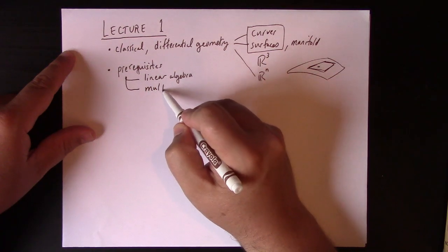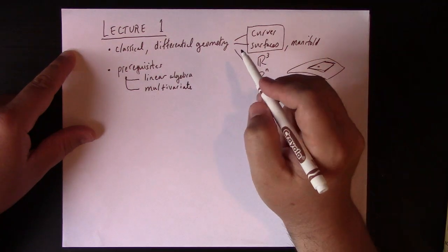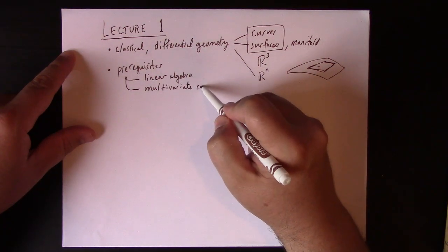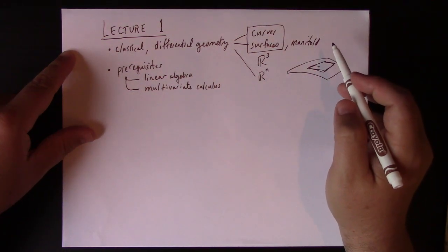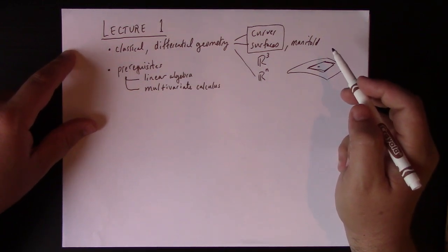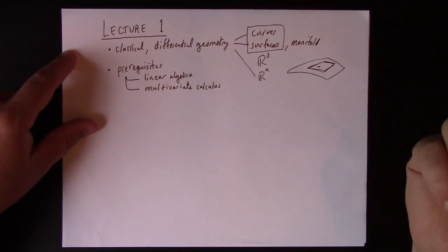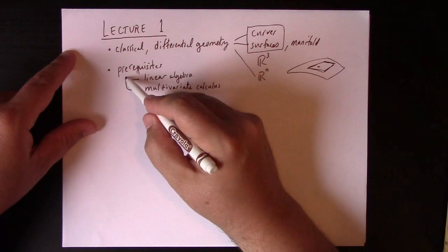And I would say also Calculus 3, multivariate calculus. You need to know how to take partial derivatives, you need to know what they mean. You also need to know a little bit about how to parametrize curves. And hopefully you've seen a surface because you've studied surface integrals before. So some experience with multivariate calculus is so important.